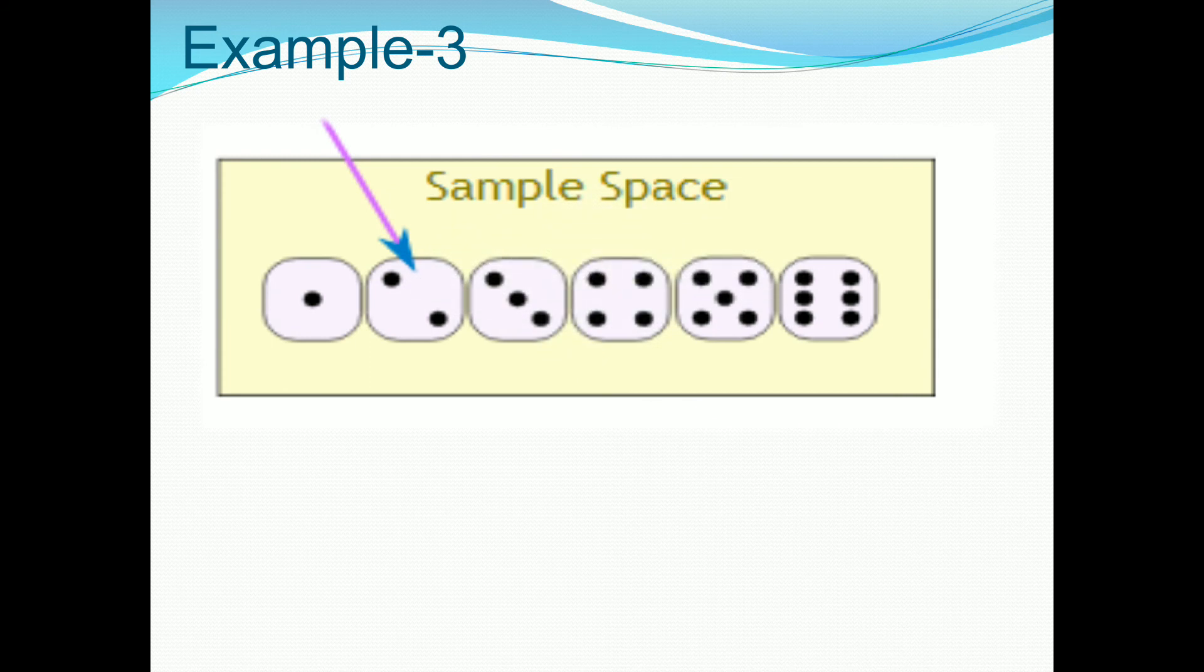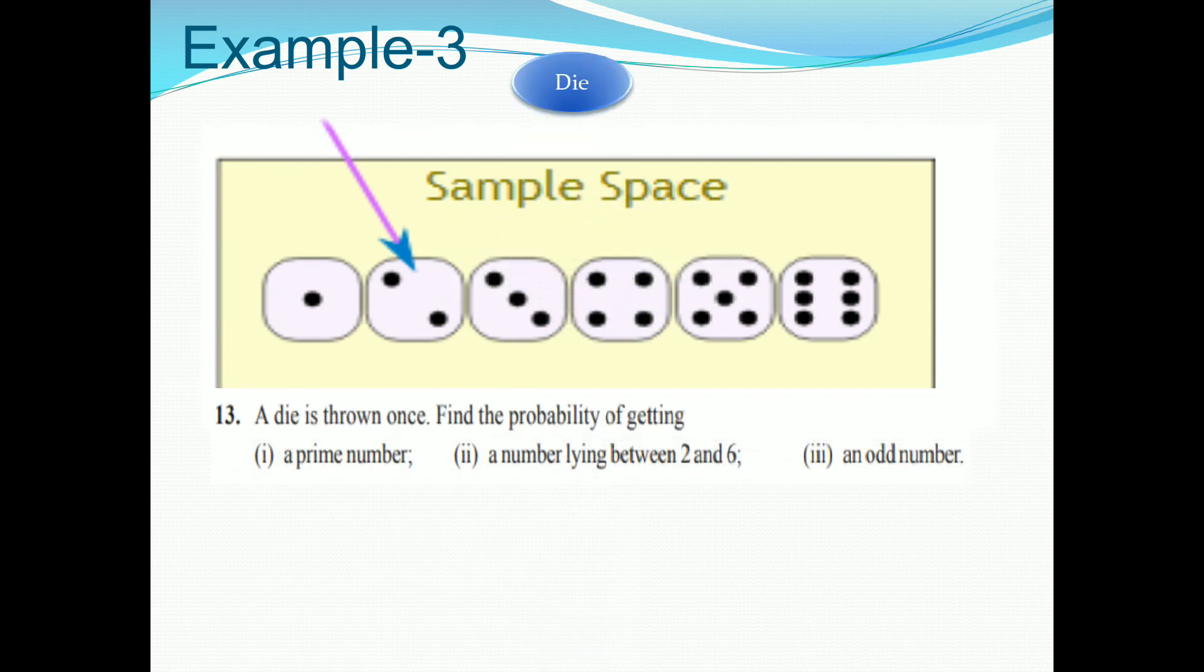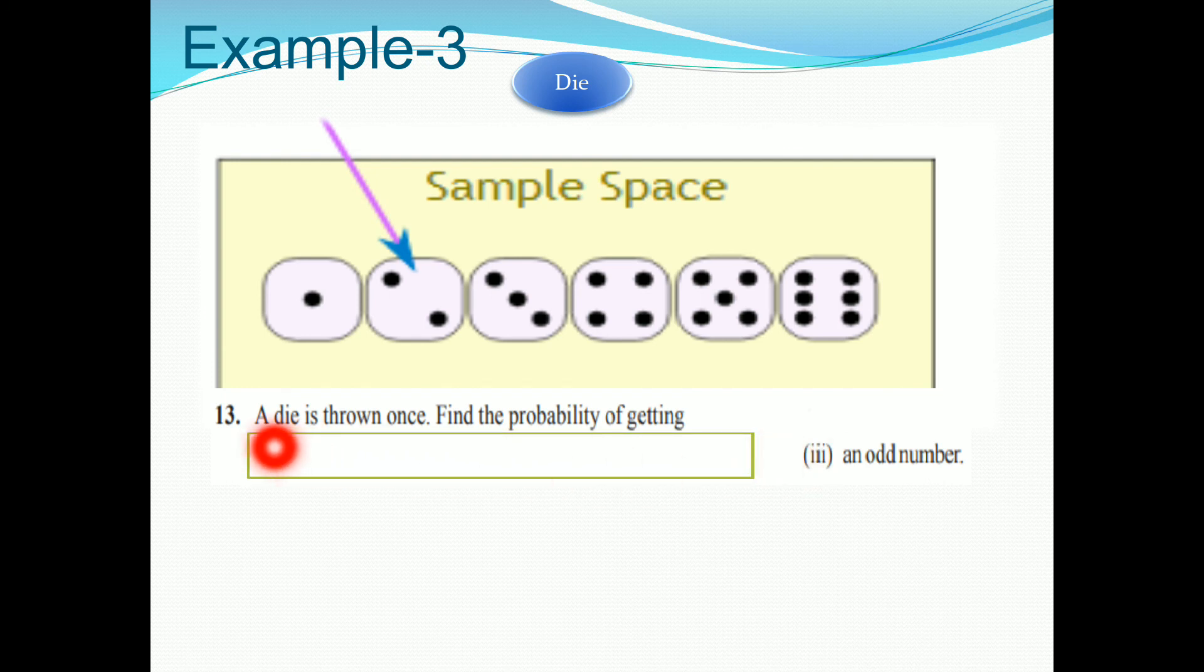Example 3, same dice. Now again, a dice is thrown once. Find the probability of getting an odd number. You know very well about the odd numbers you studied in previous classes. So first, 1 is odd number, 3 also odd number and one more 5. So 3 events are there.